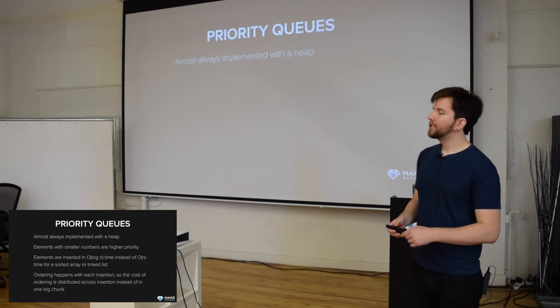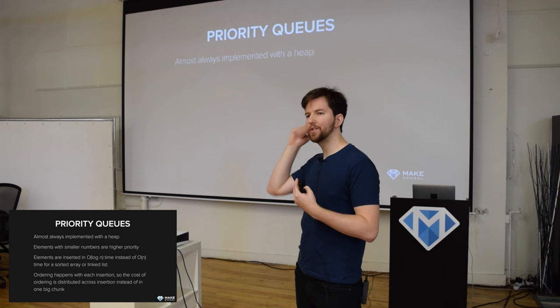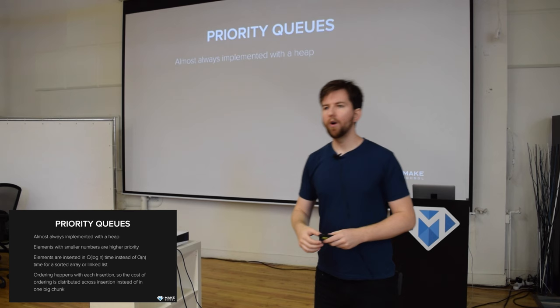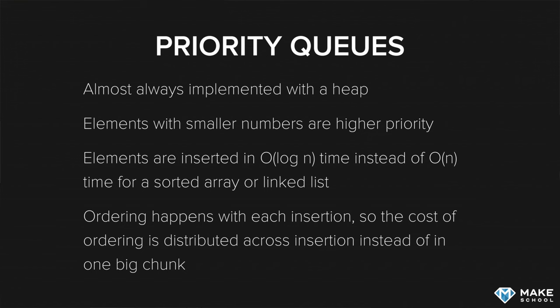So now let's talk about priority queues. Priority queues are a special kind of data structure where you insert a bunch of items and then the first item you dequeue will always be the minimum value in the case of a min priority queue. Because of that, priority queues are basically heaps, but there are other ways you can implement priority queues. The priority queue is a specific behavior and the heap is one way to implement a priority queue.